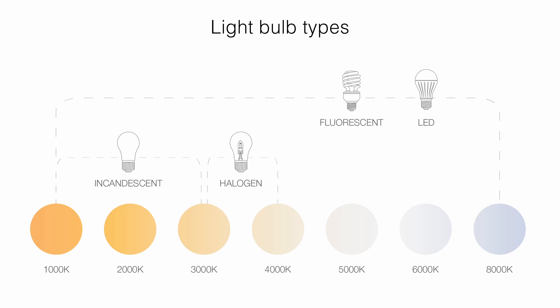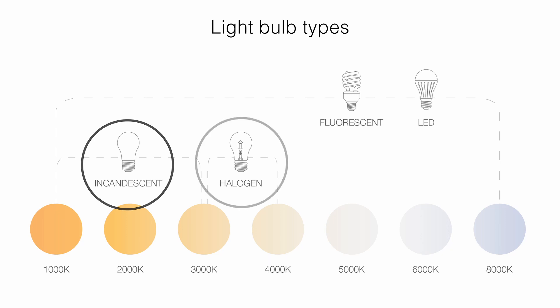Light bulb types: different types of light bulbs have distinct lifespans and uses, each with its own share of pros and cons. Incandescent light bulbs are a popular choice thanks to their beautiful warmth and how budget friendly they are. The main drawback is their inefficiency. They glow with warm tones, ranging from the golden glow of candlelight to a soft cozy warmth.